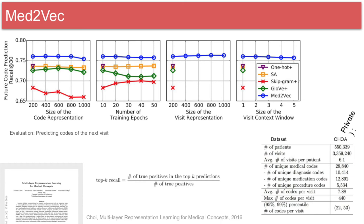The MIMIC dataset from MIT provides a public benchmark that can be used for more consistent reporting. However, it only has 40,000 patients in an ICU setting, so it is not applicable to all situations.